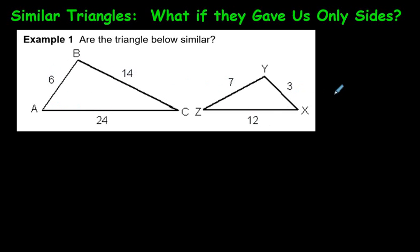So here's a quick way to find out if these two triangles are similar. And remember, similar triangles means that all the angles are the same. And so what we're going to do is have a quick way to find out if these triangles are similar given only the sides. Here we go.